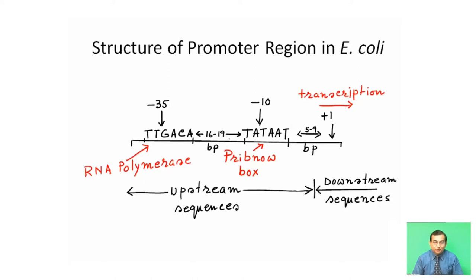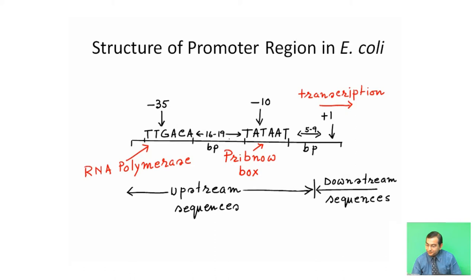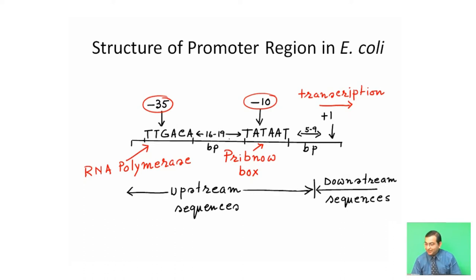In prokaryotes, in E. coli, the promoter region is present, and RNA polymerase binds with the promoter region to initiate the process of transcription. The promoter region consists of a minus 35 sequence and a minus 10 sequence. The minus 35 sequence has a consensus sequence of T, T, G, A, C, A.